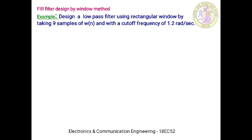In this problem we have some key information: we need to design a low pass filter, taking 9 samples of the window function W(n), and considering a cutoff frequency of 1.2 radians per second. To design the given filter with these specifications, we need to follow some general steps.